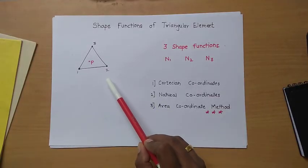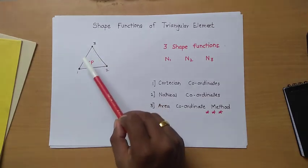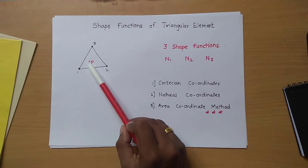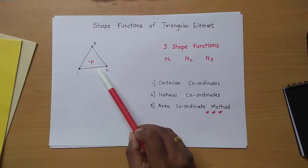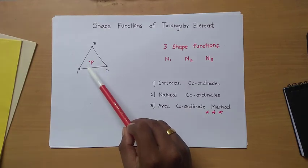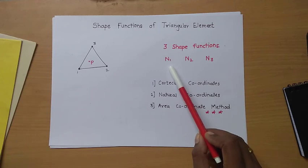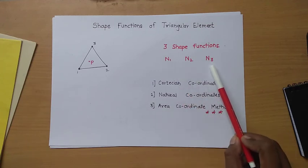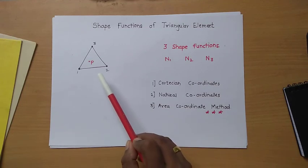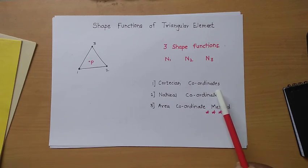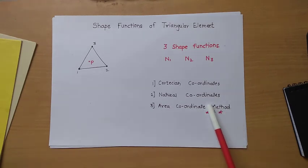This is one triangular element having nodes 1, 2, 3 numbered in anti-clockwise direction. There is a point P inside this triangular element. For this point, or anywhere within the element, we will get three shape functions denoted by N1, N2, and N3. To find out the shape functions, we have three different methods: Cartesian coordinates method, natural coordinates method, and area coordinate method, which is one of the simplest methods.